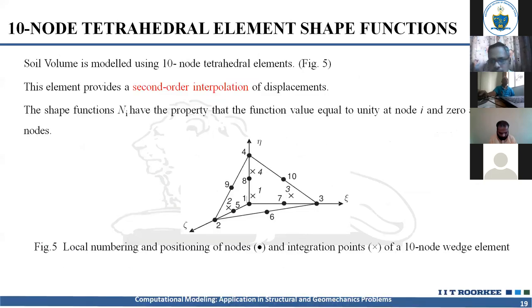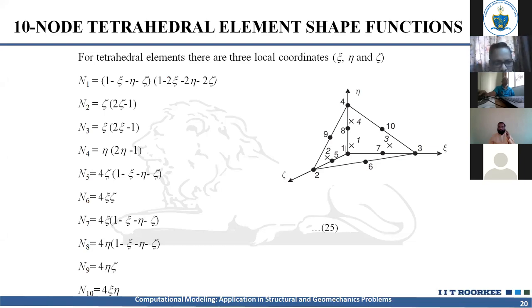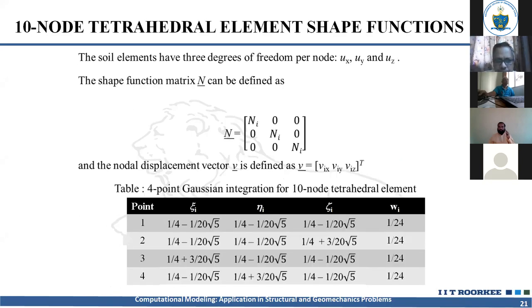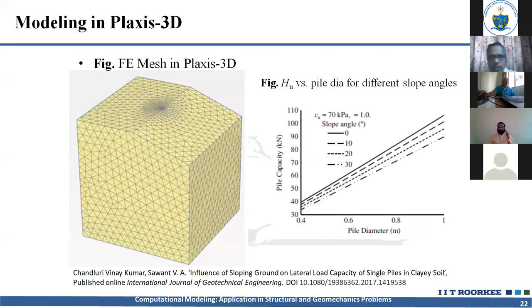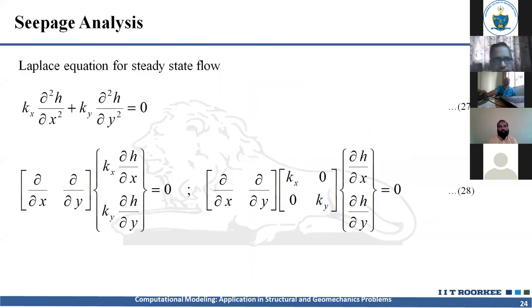For 3D problems, software like PLAXIS uses a 10-node tetrahedral element where every edge has 3 nodes, giving quadratic (parabolic) variation along each edge. There are 10 nodes, 10 shape functions N1 to N10, and specific Gauss points for integration. This can also be solved analytically using a similar formula as for the 6-node element. An example applied this to a pile on sloping ground to find pile capacity corresponding to a displacement of 5mm.